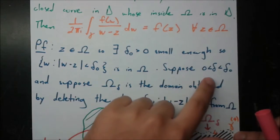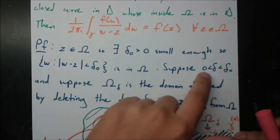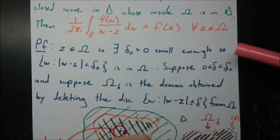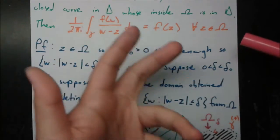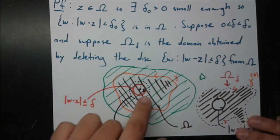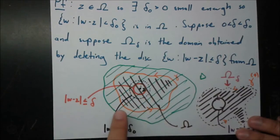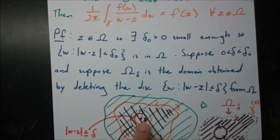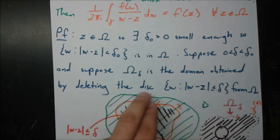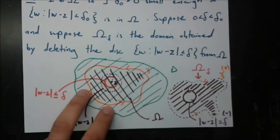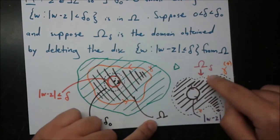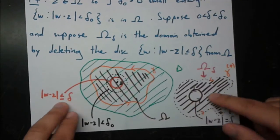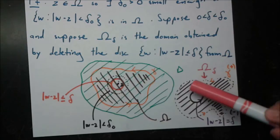Now suppose delta is sandwiched between 0 and delta_0. Since delta_0 is positive, we can always find a positive number smaller than it — that's how numbers work, there are always gaps in between. So I've made a new red circle with radius smaller than the black one: modulus W minus Z less than or equal to delta — notice the less than or equal to, so we include the boundary. Omega_sub_delta is the domain obtained by deleting this disk from the original omega, leaving a hole in the middle.